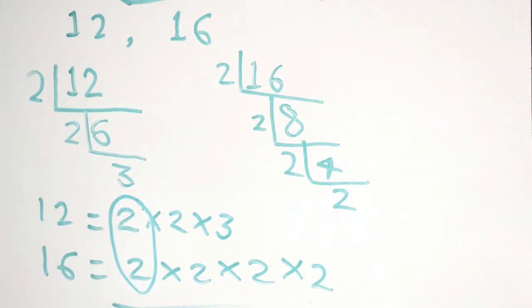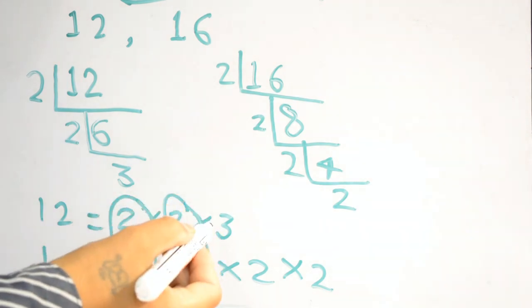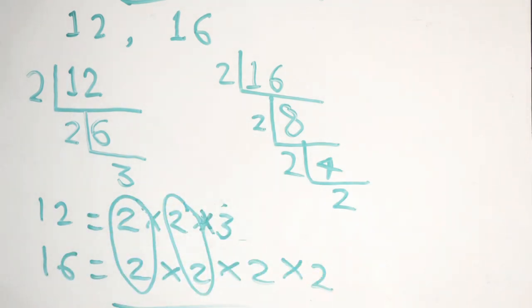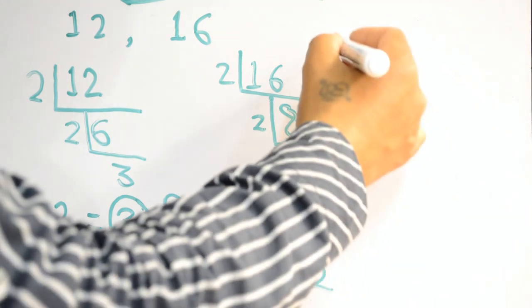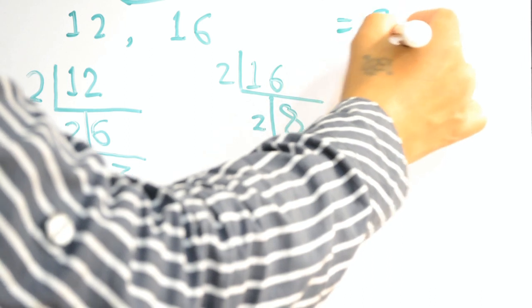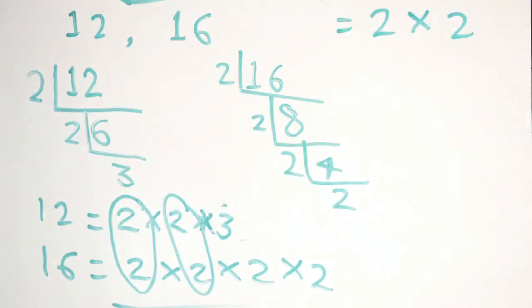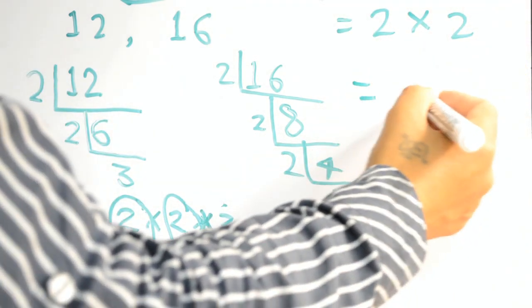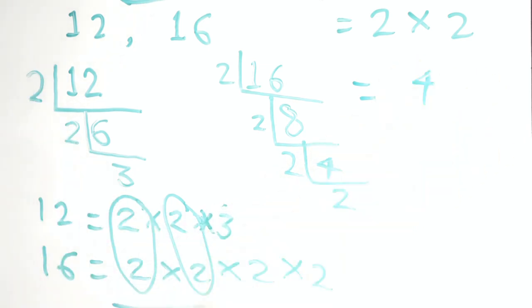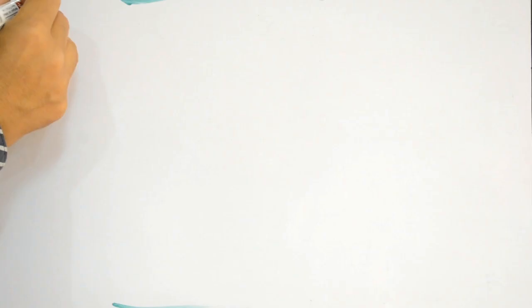This 2 is a common number, this 2 is a common number. We have only 3 left, so we don't have any more common numbers. So we have common numbers 2 times 2. Multiply this common number, which is 4. So 4 is the highest common factor of 12 and 16. Look at another example: 12, 18, and 24.